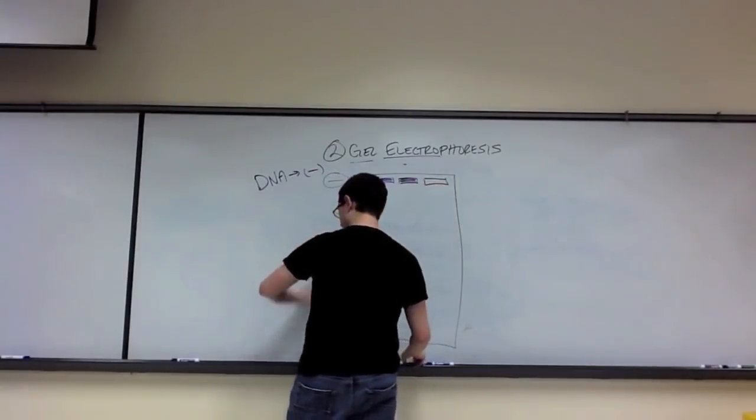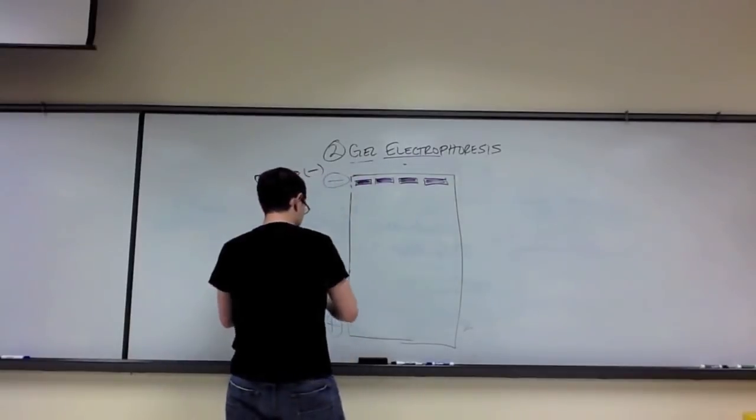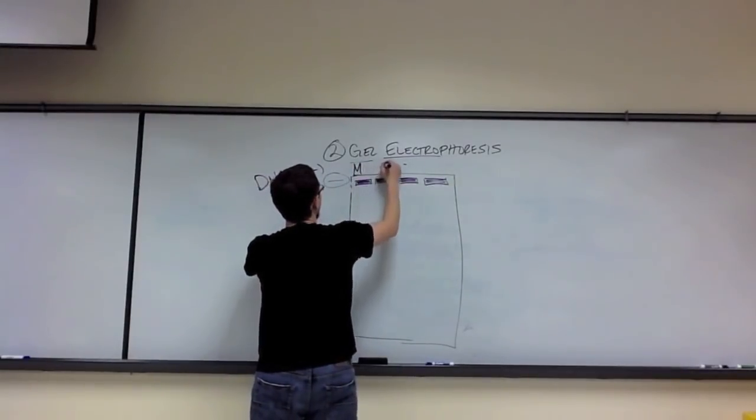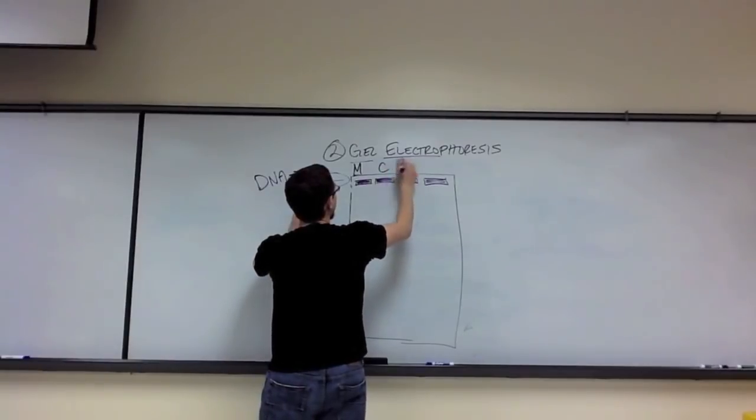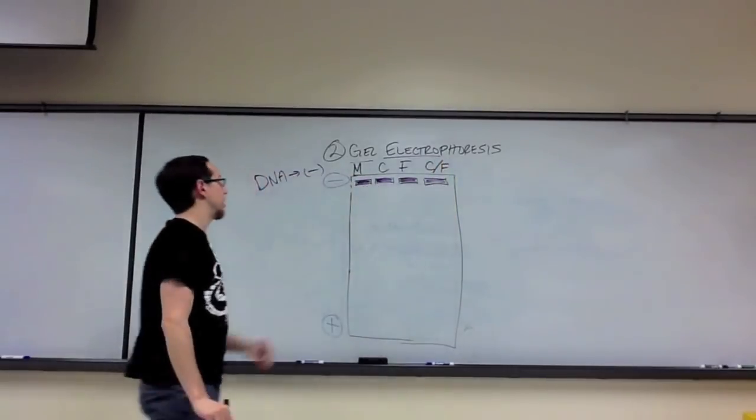So, I've got my lanes. I load my DNA. And this time, my DNA is going to come from the following individuals: mother, child, potential father, and then this final lane is going to be called child-father and I'll explain it at the very end.